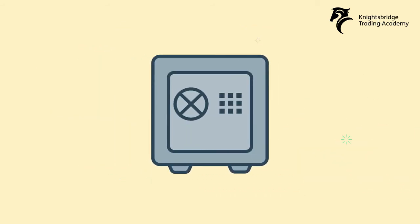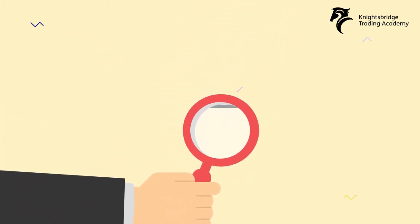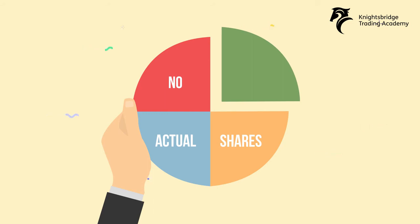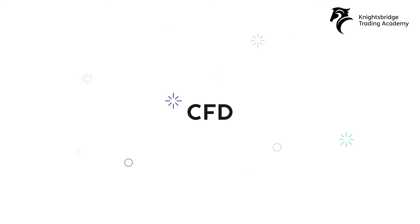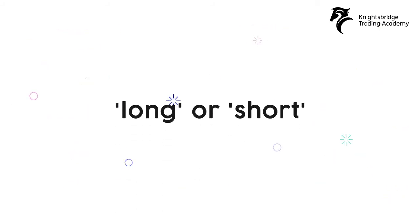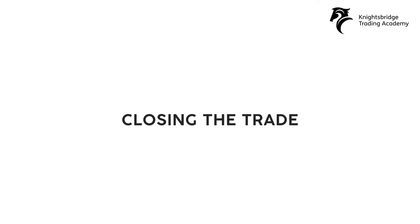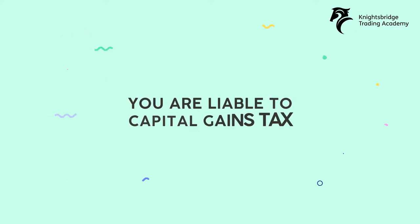There is no restriction on the entry or exit price of a contract for difference, no time limit to exchange the price difference in the asset, nor any restriction on buying first or selling first. No actual shares are physically bought or sold and you never have ownership of the underlying asset. Positions can be closed at any time during normal market hours. A CFD can only be closed by making a second reverse trade to your original long or short position. Commission is paid on each side of a CFD trade — a commission for opening a trade and a separate commission for closing the trade. This is usually calculated on the underlying contract value. You are liable to capital gains tax.